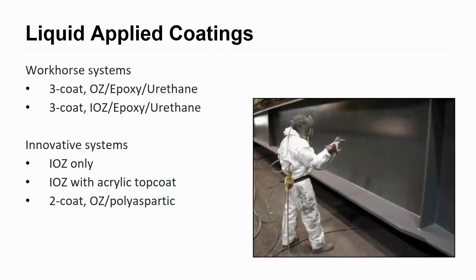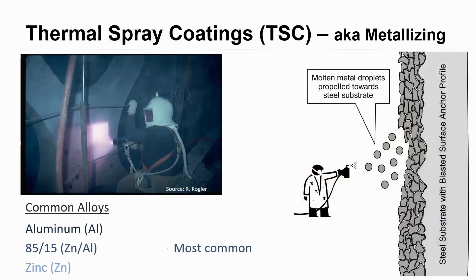Our typical three-coat systems — whether using organic or inorganic zinc primer — are what we call our workhorse systems. Some newer systems being investigated and used more these days include a single coat of inorganic zinc (IOZ) with an acrylic latex top coat, and two-coat systems using organic zinc primer with polyaspartic top coats. These are some of the more current systems being used today.